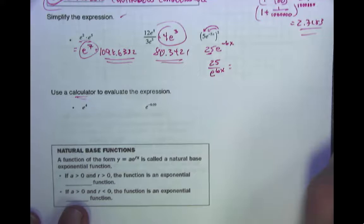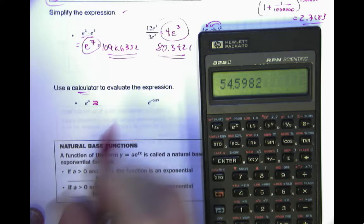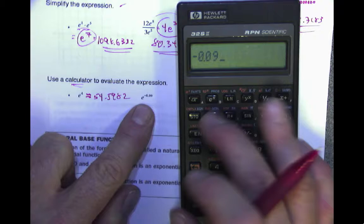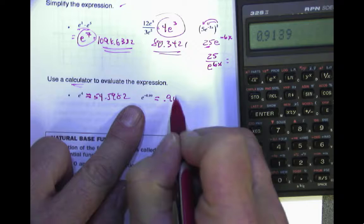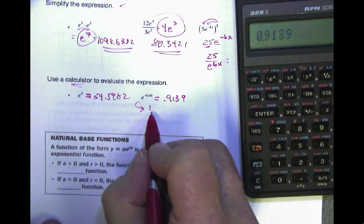Let's make sure we know how to do this. E to the 4th power gives that number — approximately 54.5982. And here, E to the negative 0.09 — I punch in negative 0.09 and hit E — gives about 0.9139. That makes sense because it's negative, so it throws it into the denominator. What this really says is 1 over E to the 0.09, and you get that number.